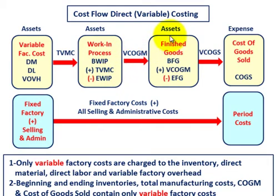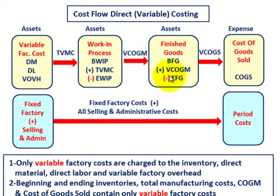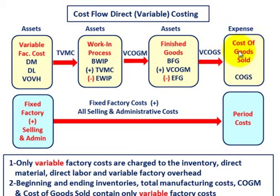Those variable cost of goods manufactured flow into another asset account — our finished goods account. Here we take beginning finished goods, plus the variable cost of goods manufactured coming out of WIP, then subtract ending finished goods. That gives us our variable cost of goods sold, which is then expensed under cost of goods sold when our products are sold.